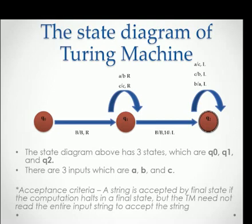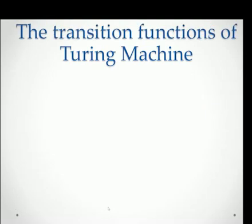For Turing machine, there is an acceptance criteria. A string is accepted by final state if the computation halts in a final state, but the Turing machine need not read the entire input string to accept the string.